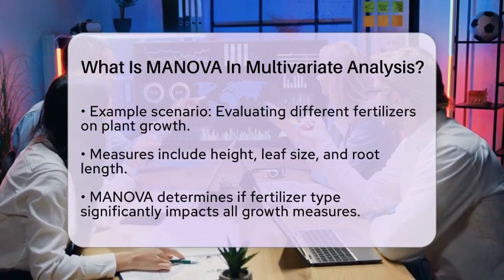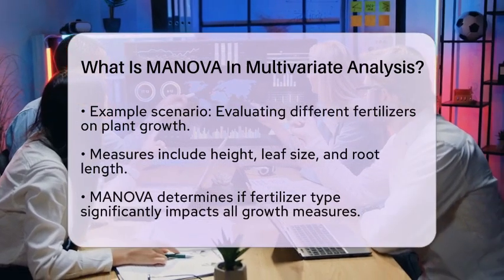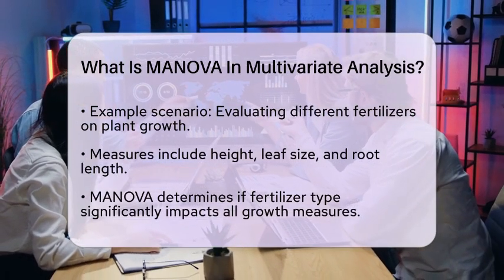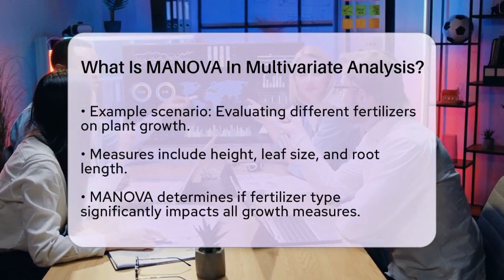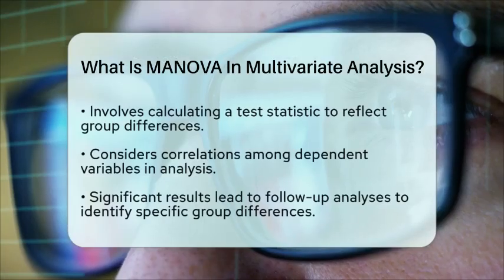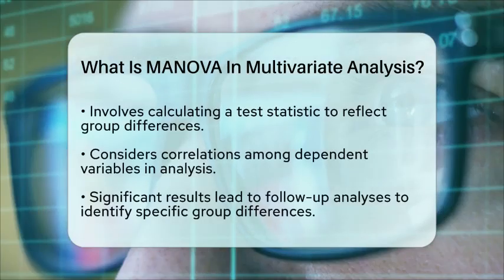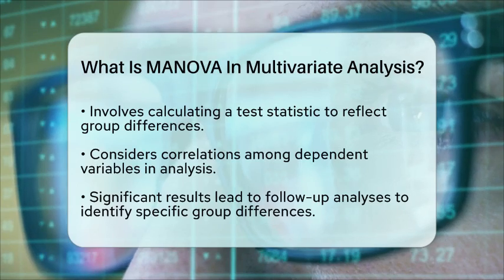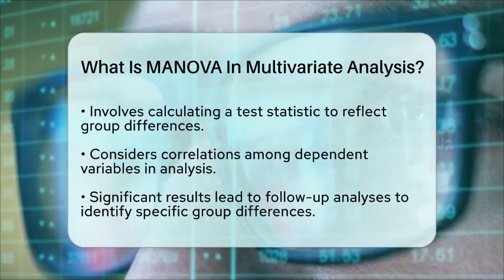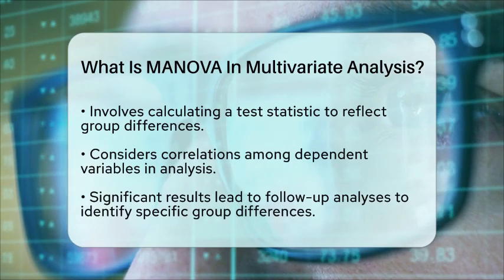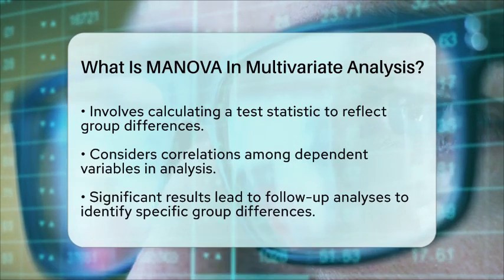The process involves calculating a test statistic that reflects the differences between groups while considering the correlations among the dependent variables. If the results indicate significant differences, researchers can then conduct follow-up analyses to identify which specific groups differ from each other.